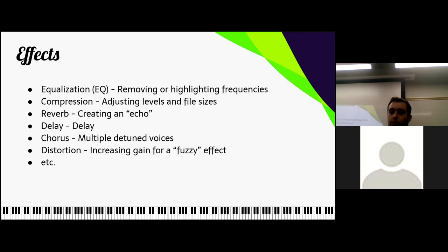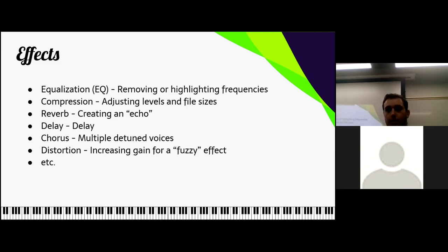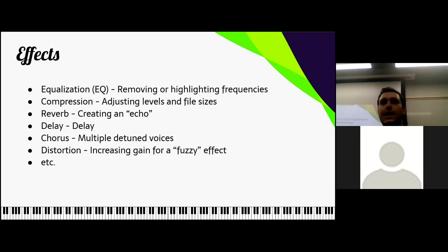Then we have compression, which we touched on earlier when talking about files — it's adjusting levels and file sizes. When I say levels, I mean kind of the volume. If I'm creating a song with a guitar, piano, and vocalist, they might not be at the same volume. With compression, I get these tracks to the same volume while also removing information at the same time. This decreases file size and makes it more consumable for the listener.